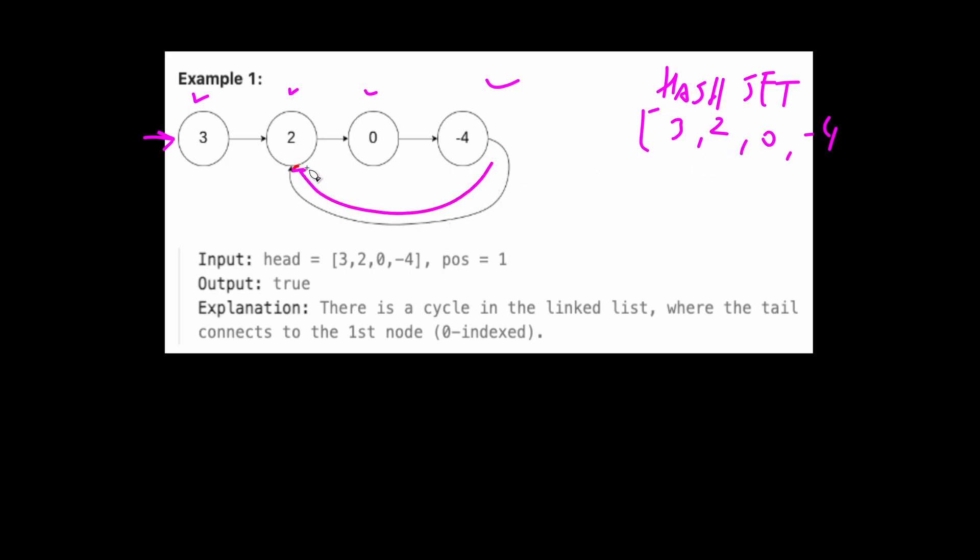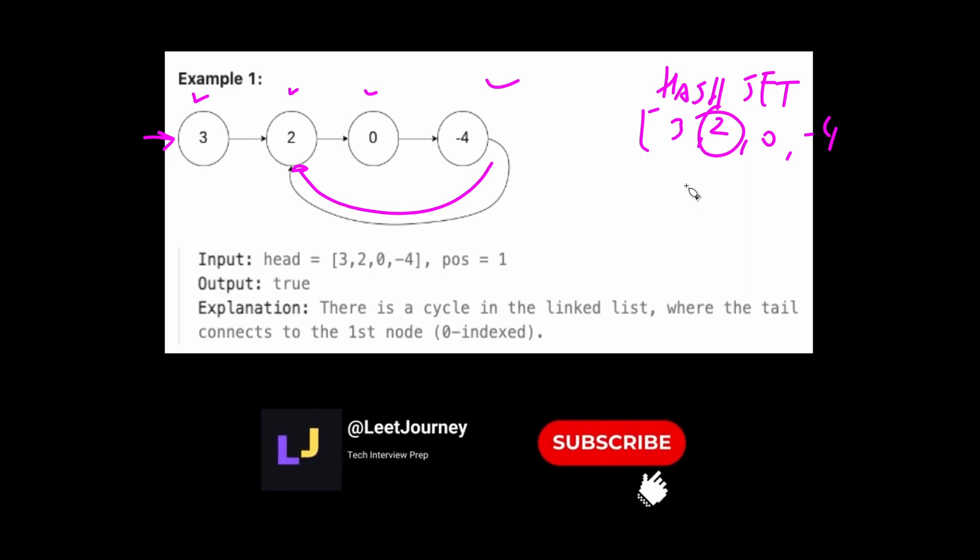Now we're going to add two again. But because this is already in the hash set, we can stop and return true. It means that there is a cycle in our linked list.